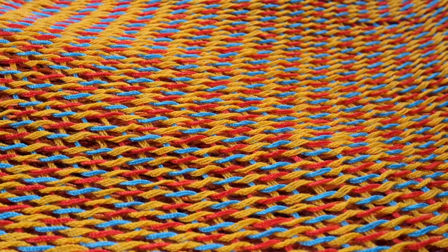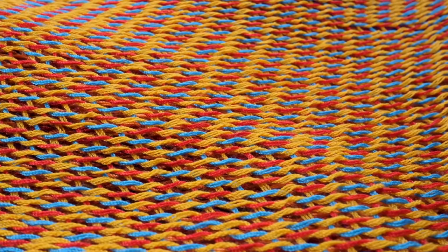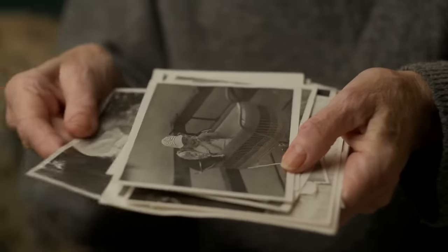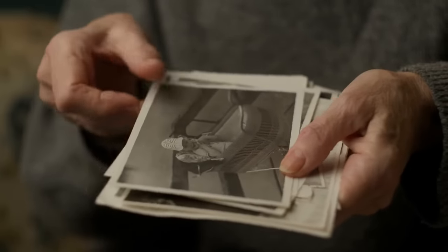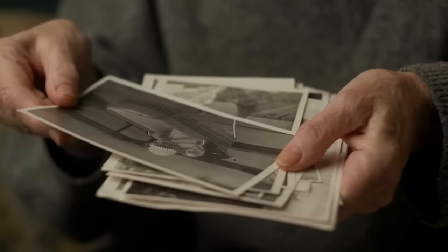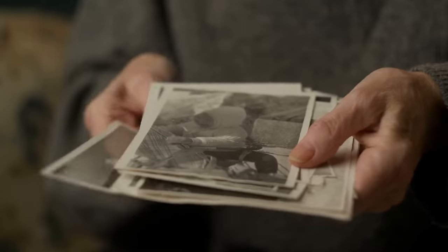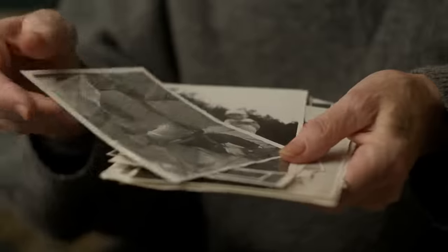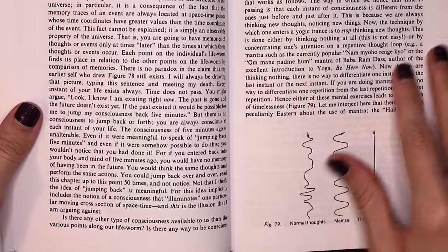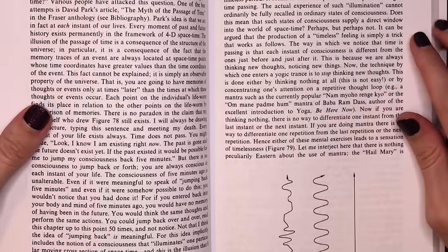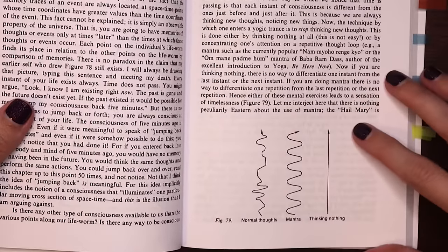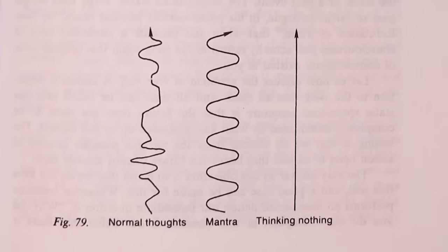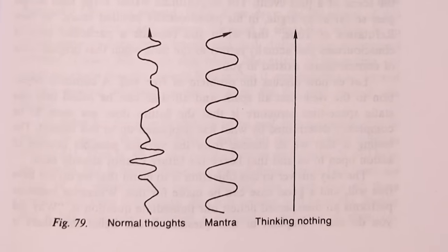One idea is that maybe all instants of time do exist, but because our memories only relate to events that happened at previous time steps to our present moment, we get the illusion that we are moving forwards in time always. The author then makes a slight departure from physics, but this next diagram helps me understand meditation better than any yoga class I've been to.